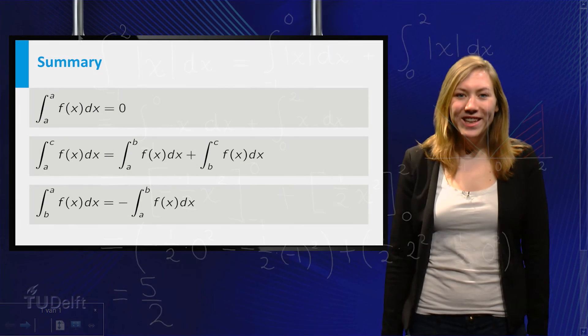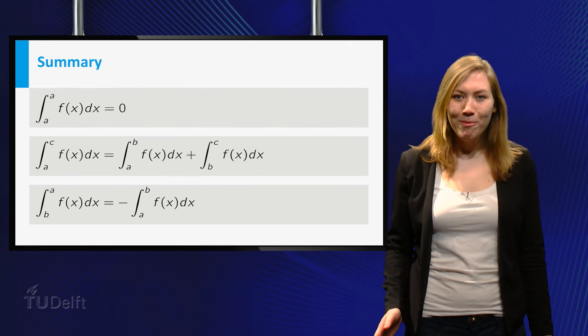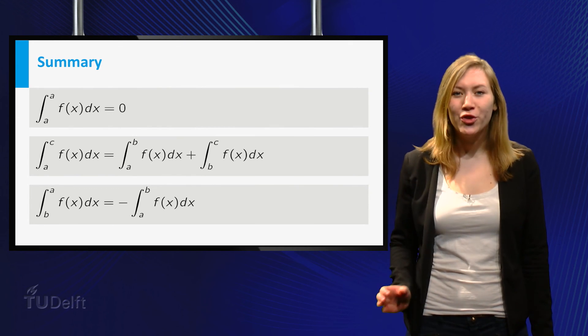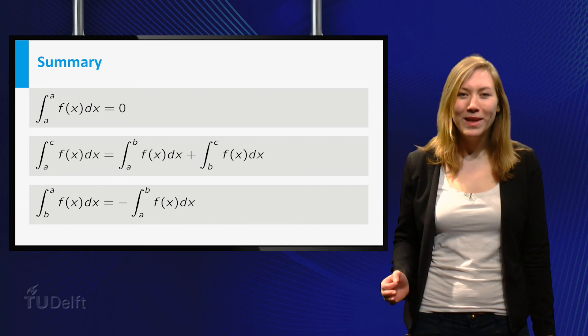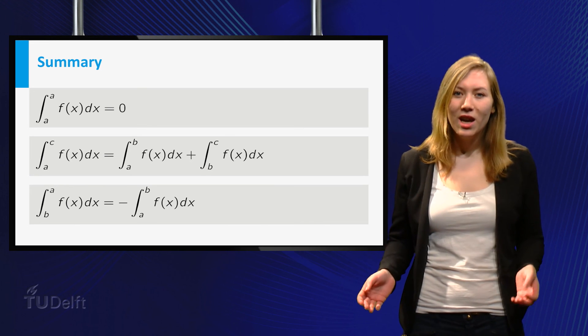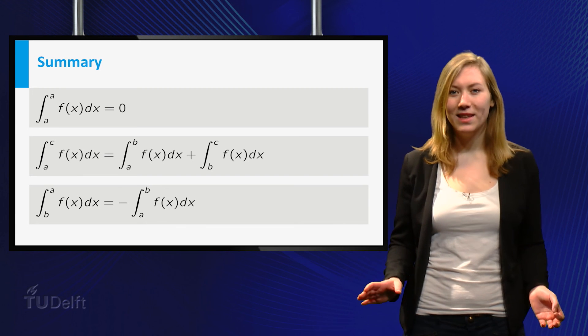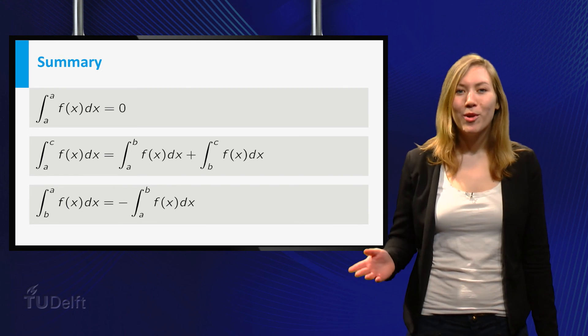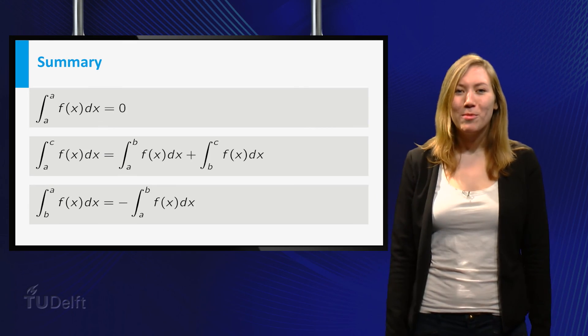So in summary, you saw three properties. An integral with the same upper and lower bounds equals 0 for every function. We can split the integral in multiple parts and add them. Interchanging upper and lower bounds of an integral results in adding a minus sign. We use the second property to integrate the absolute value of x. Good luck applying these properties!